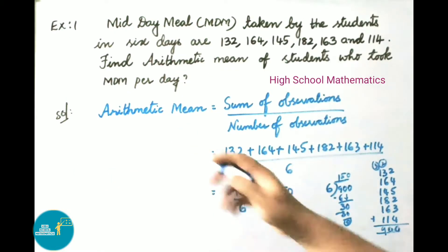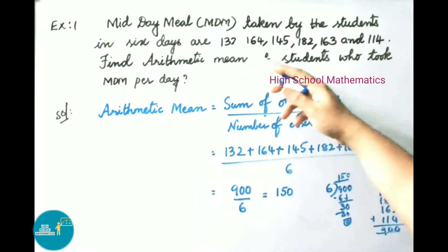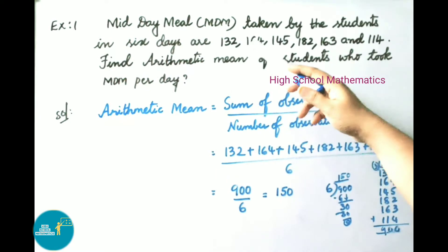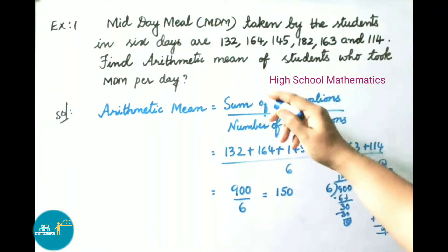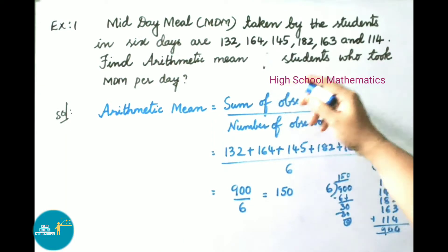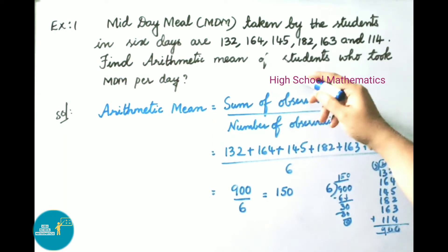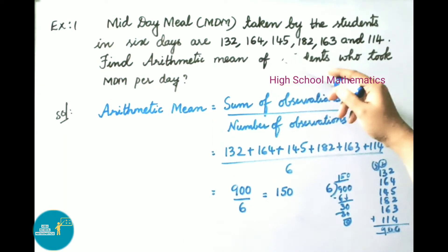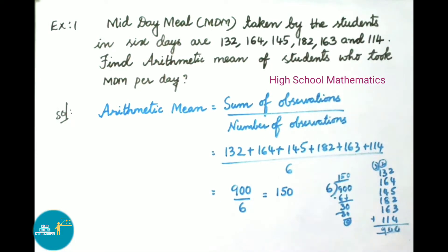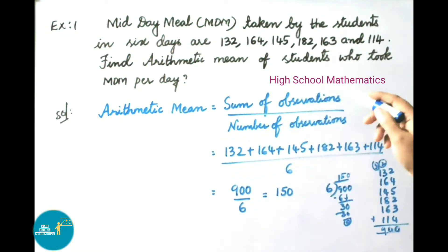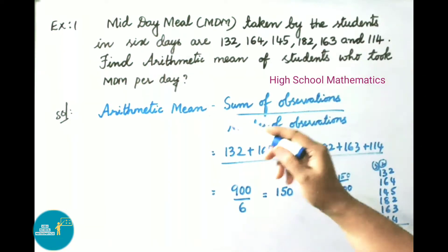Example 1: Midday meal (MDM) taken by students in 6 days are 132, 164, 145, 182, 163, and 114. Find the arithmetic mean of students who took MDM per day.